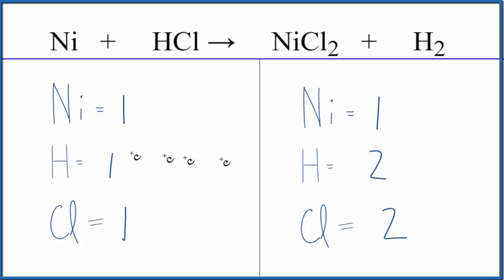When we look at this, we can see that we need to double the hydrogen and double the chlorine. And to do that, we could just put a coefficient of two in front of the hydrochloric acid.